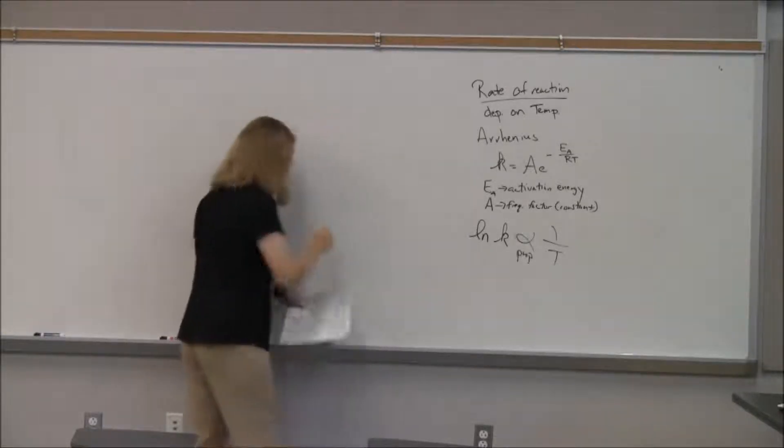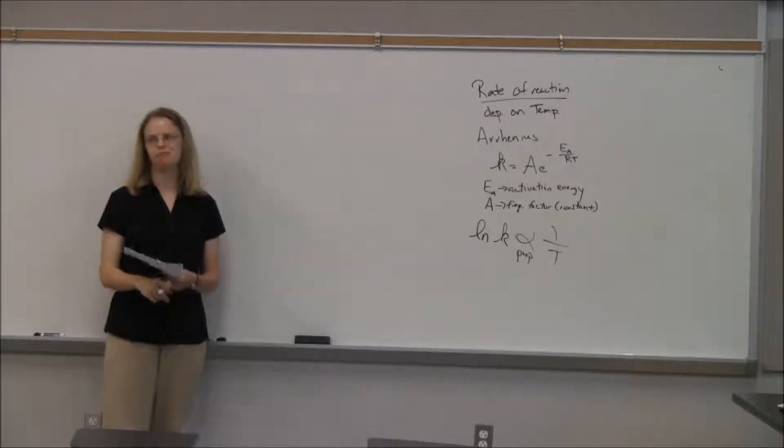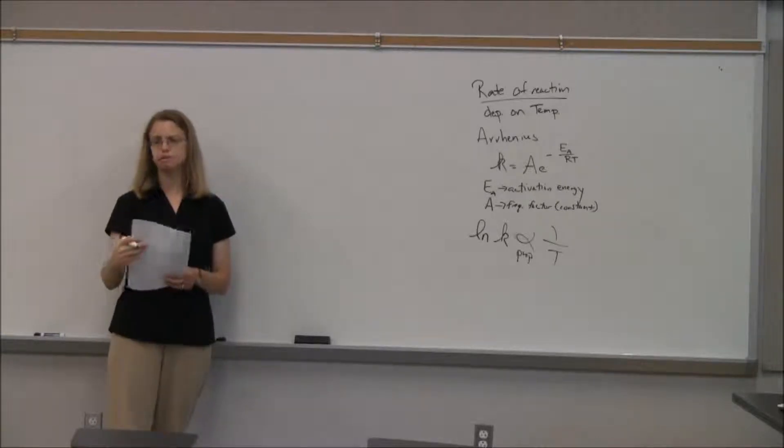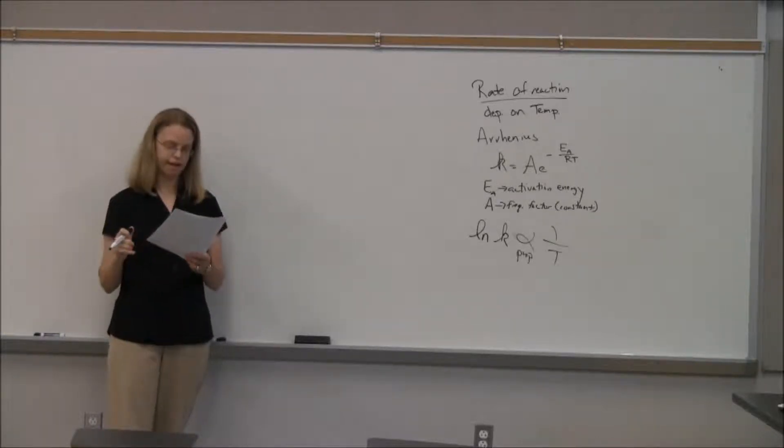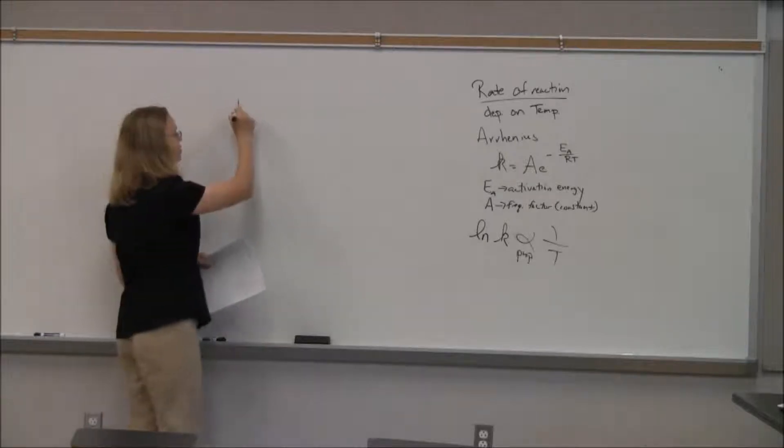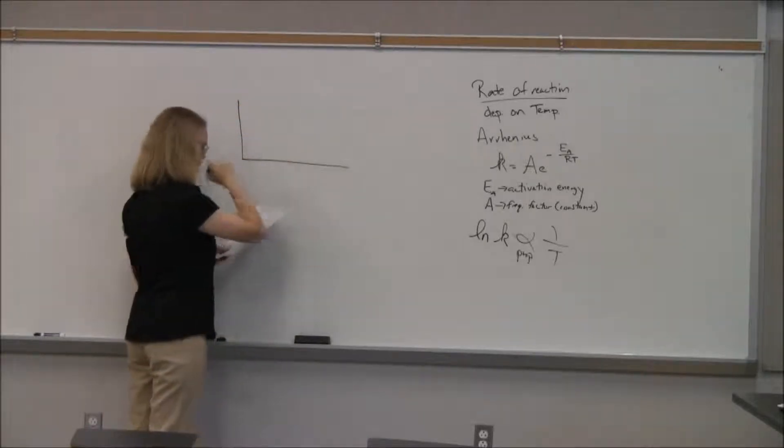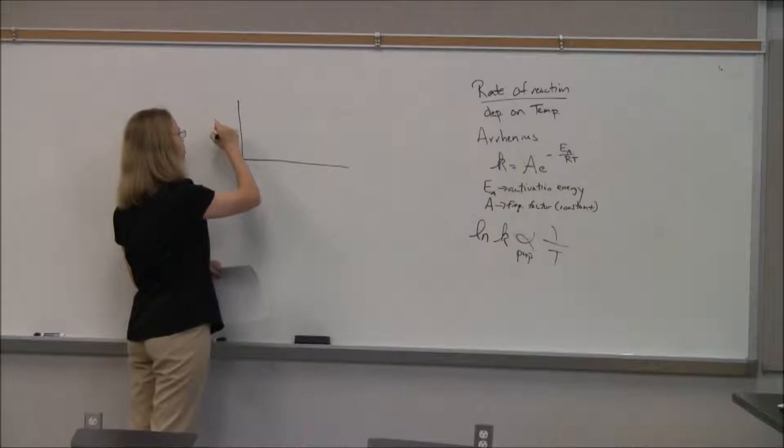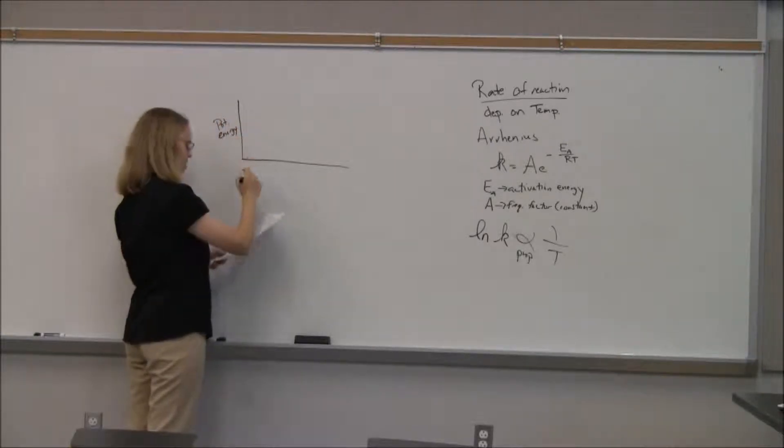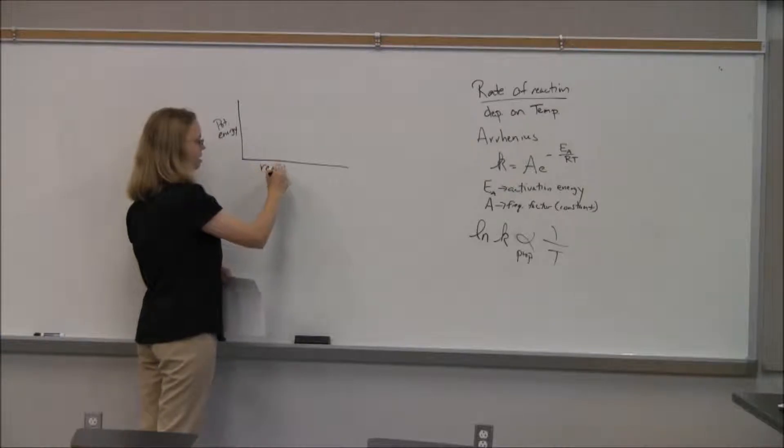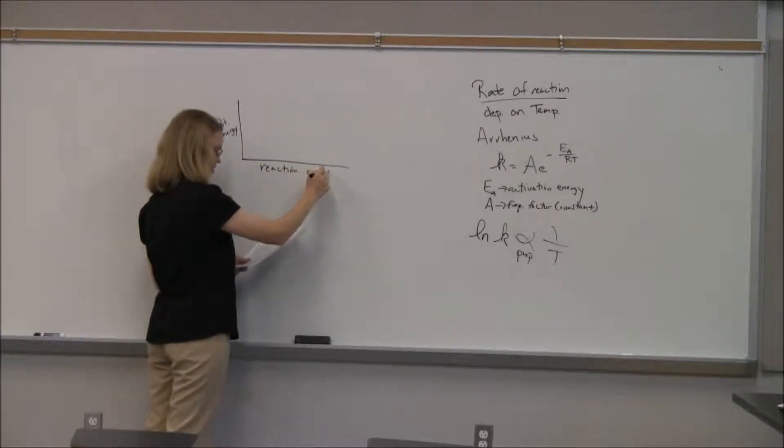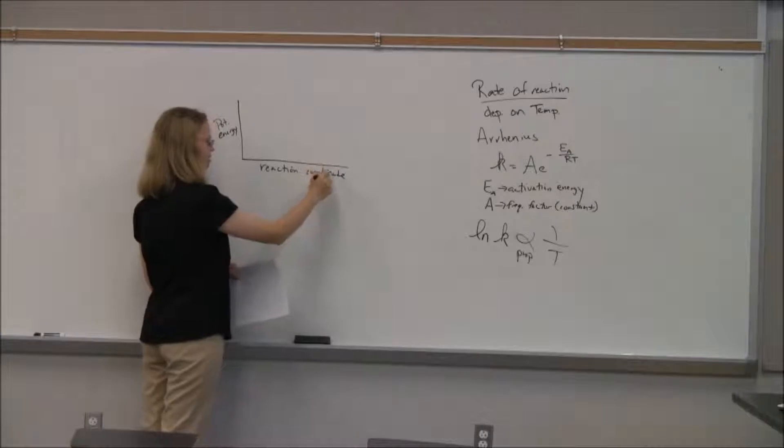What this tells you, though, is if you were to take the natural log of K, the natural log of this side, you'd get minus Ea over R times 1 over T plus the natural log of A. And then we kind of have natural log of K proportional to 1 over T.